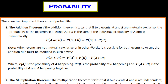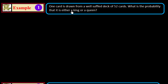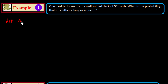Let us explain with a worked example. One card is drawn from a well-shuffled deck of 52 cards. What is the probability that it is either a king or a queen? We know that in the deck of 52 cards there are four cards of king. Let event A be the event of getting a king.